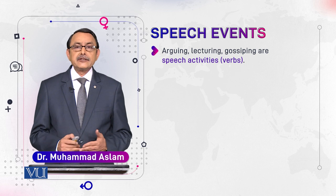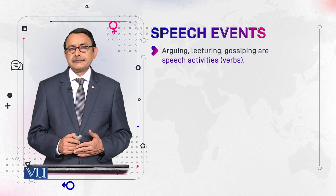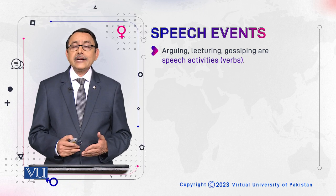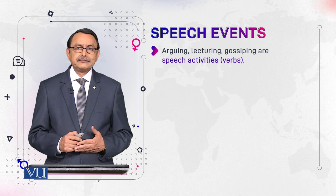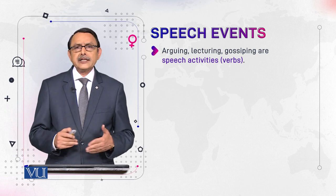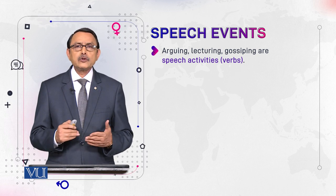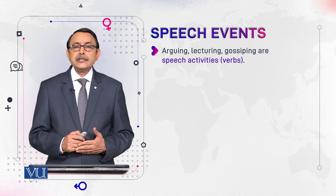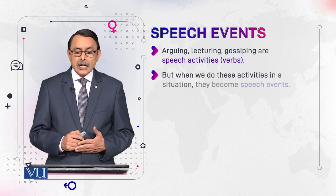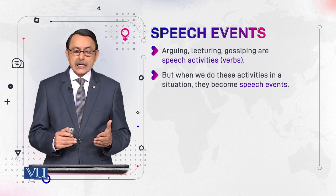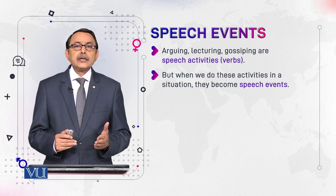Going, lecturing, gossiping — they are speech activities. The topic of this module is how activities become events. Why are we taking lecturing and gossiping as activities? Because they are verbs. Grammatically, they are verbs, and verbs are action words. But when we do these speech activities in some situations, these activities become speech events.